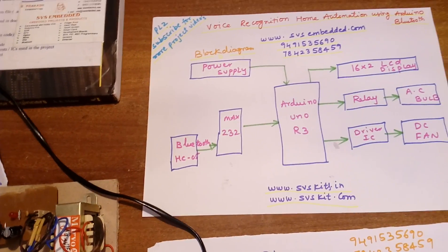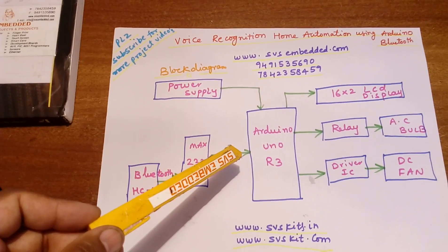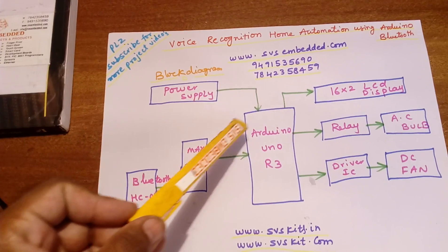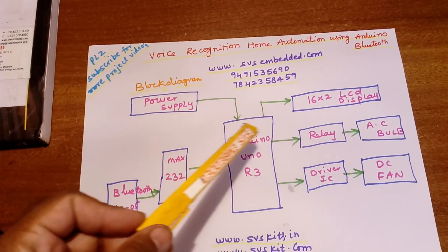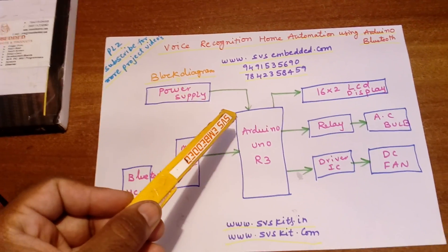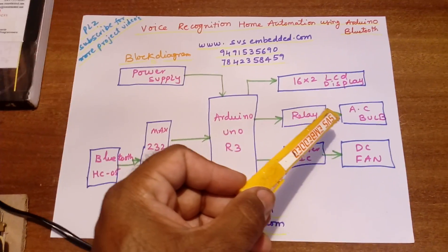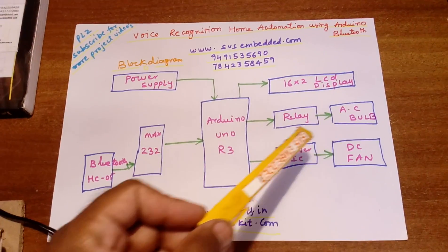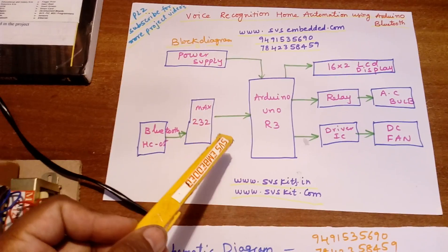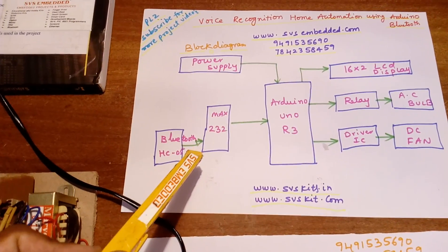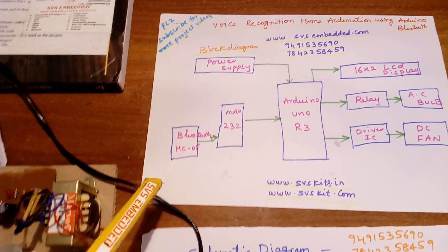Coming into the block diagram: Arduino Uno R3, a 16x2 LCD display, one power supply section, relay coil, one AC bulb, driver IC, one DC fan, one MAX232, and one HC05 Bluetooth module.